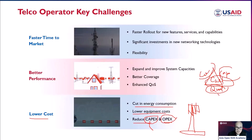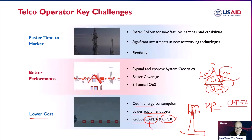When computing the feasibility of a cell site or network in a certain area, you calculate the payback period. The simple formula is: payback period equals CAPEX divided by (revenue minus OPEX). This tells you how much time you need to recover your CAPEX based on the revenue coming in.